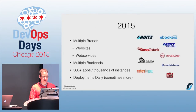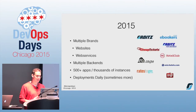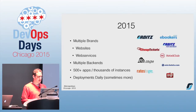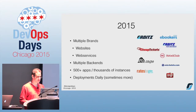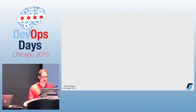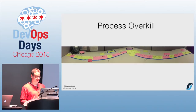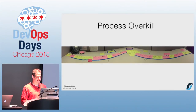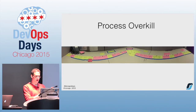Fast forward to today: we've got multiple brands, web services — if you search Kayak, they actually go through our web services. The platform is now composed of over 500 services running on thousands of instances, and we do deployments more or less daily. Applications that evolve over a decade tend to accrue process. This picture shows somebody trying to stitch out the path from code to production and all the steps it took.